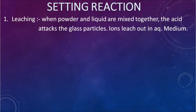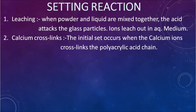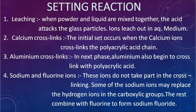Setting reaction — Leaching phase: when powder and liquid are mixed, acid attacks the glass particles. Ions are released from the powder into the aqueous medium — such as calcium ions, aluminum ions, sodium ions, and fluoride ions. Calcium ions bond with polyacrylic acid. In the next phase, aluminum crosslinks form. Sodium and fluoride ions do not crosslink. Some sodium ions replace hydrogen ions in the carboxyl groups; the remaining sodium ions combine with fluoride ions to form sodium fluoride.